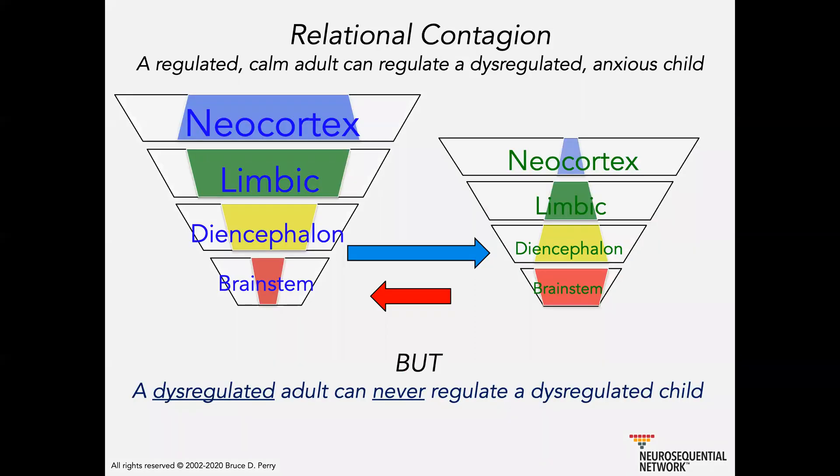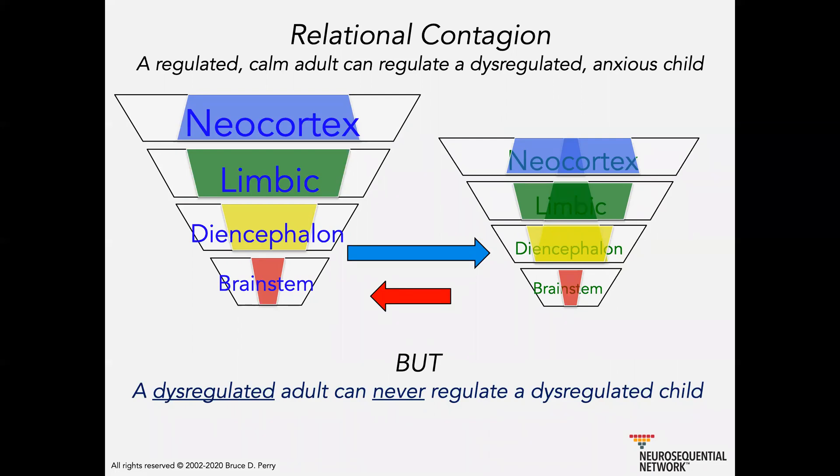Now, this is one of the big challenges that we have, obviously, in our field. And as I talked about before, if you have a regulated adult and a dysregulated child, you have the potential to begin to shift the internal state of that child that make them feel more regulated. And this is something that, again, all of these things happen in a sequential manner. That the more we appreciate the sequential processing, the more we recognize that there are times when words aren't going to help. And there's times when words are going to be processed accurately. But if you adhere to the sequence of engagement and you make sure that you're regulated so that you can take advantage of relational contagion and you can regulate a child to a certain degree, you'll be able to effectively connect with that child and then have a much higher probability of being able to reason with them.